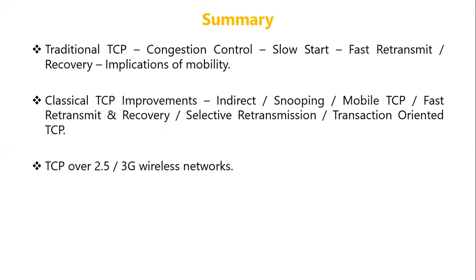We discussed several classical TCP improvement techniques so that TCP will perform well in wireless networks, such as indirect TCP, snooping TCP, mobile TCP, fast retransmit and recovery, selective transmission, and transaction-oriented TCP. We also discussed how TCP can be improved by fine-tuning certain parameters so that it will work better on 2.5G and 3G networks.